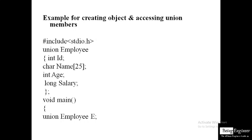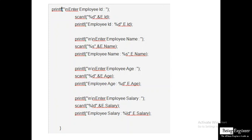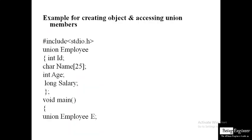If this were a structure instead of a union, it would take the sum of all memories. But in the case of union, it always uses the memory of the largest member. After the definition, close with a curly brace and semicolon. In void main, we create an object for the employee union: 'union employee e;', where e is a variable of type employee.